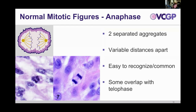During anaphase, the plate or ring from metaphase separates into two clusters, each being pulled apart along the microtubules of the spindle. You'll see variable distances of these clusters in histopathology — in some images the two clusters are really close together, in others they are further apart. This is a very easily recognizable phase of mitosis where we tend to get less inter-pathologist variation. It's not as important to see the spikes and projections because the two separating clusters are very recognizable. There is a little bit of overlap with telophase, but these are all part of the continuum.